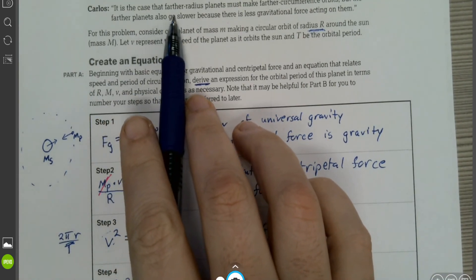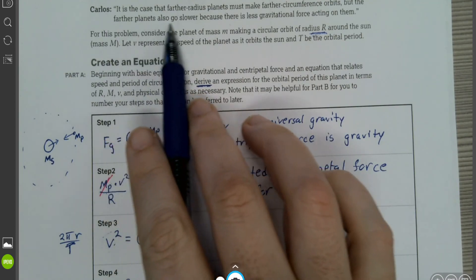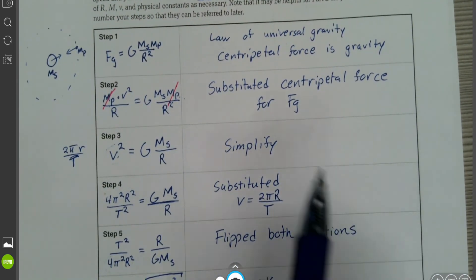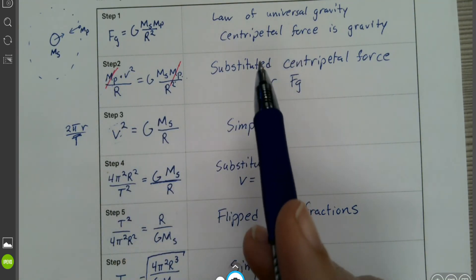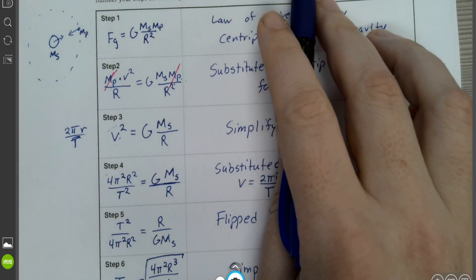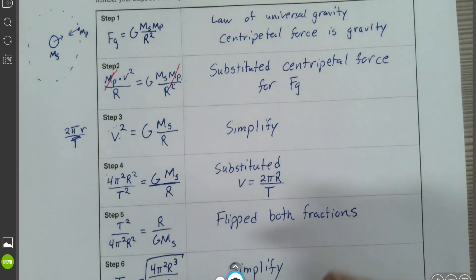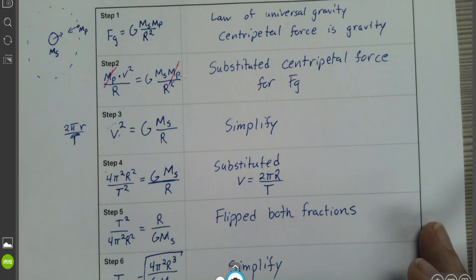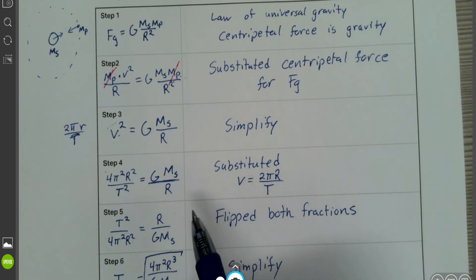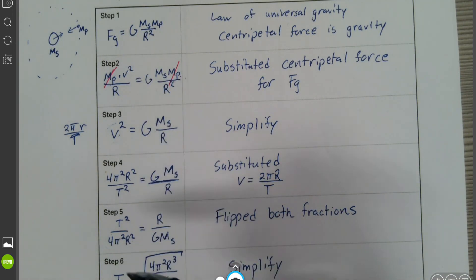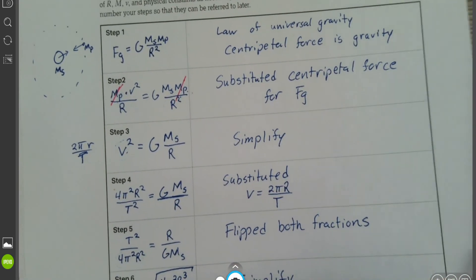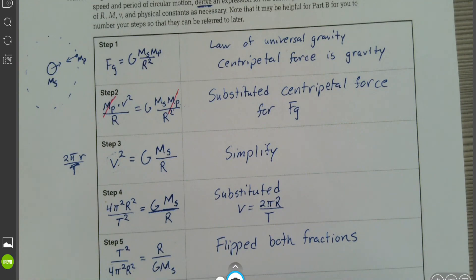Carlos says farther planets must make further circumference orbits, and also go slower because there is less gravitational force acting on them. Step two verifies that gravity acts as centripetal force, and the inverse R-squared relationship in step one confirms that gravitational force decreases with distance, causing farther planets to move slower. So between the three students, Carlos has the right of it. I hope this was helpful, and I will talk with you later.